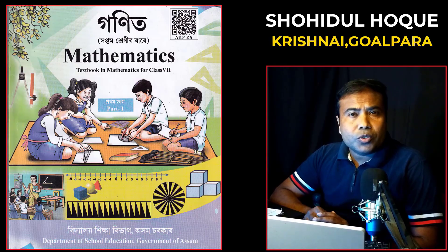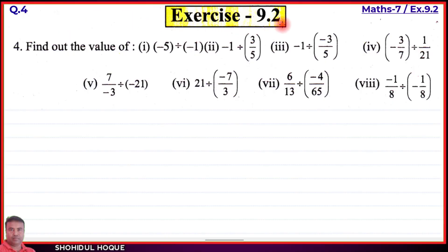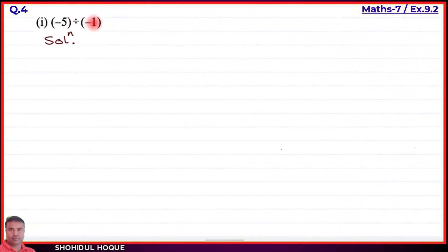Mathematics class 7, new book part 2, exercise 9.2, English medium. Question number 4: find the value. We have eight parts to solve, involving division of fractions by rational numbers. Let's start with part number 1: minus 5 divided by minus 1.